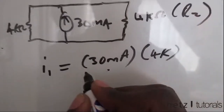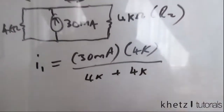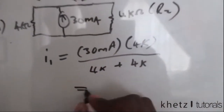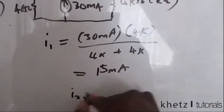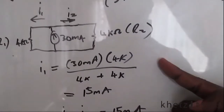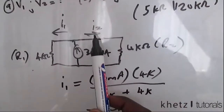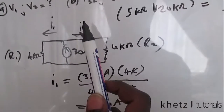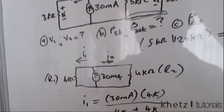So that's 4k divided by (4k + 4k), which is the same as half multiplied by 30 milliamperes, giving i1 = 15 milliamperes. The same applies for i2. Since 30 milliamperes is the total, i1 + i2 equals the current source, so you can subtract i1 from 30 to get i2 = 15 milliamperes. Both methods are valid. We now have i1 and i2.